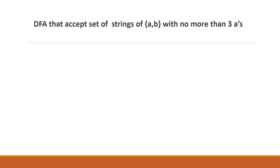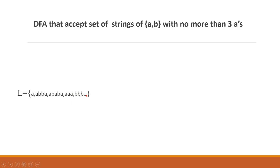You can design a DFA for this. For example, a language string with a single A is accepted. Next, a string like A, B, B, A - two a's - is accepted. Also A, B, A, B, A - three a's with two b's - is accepted.